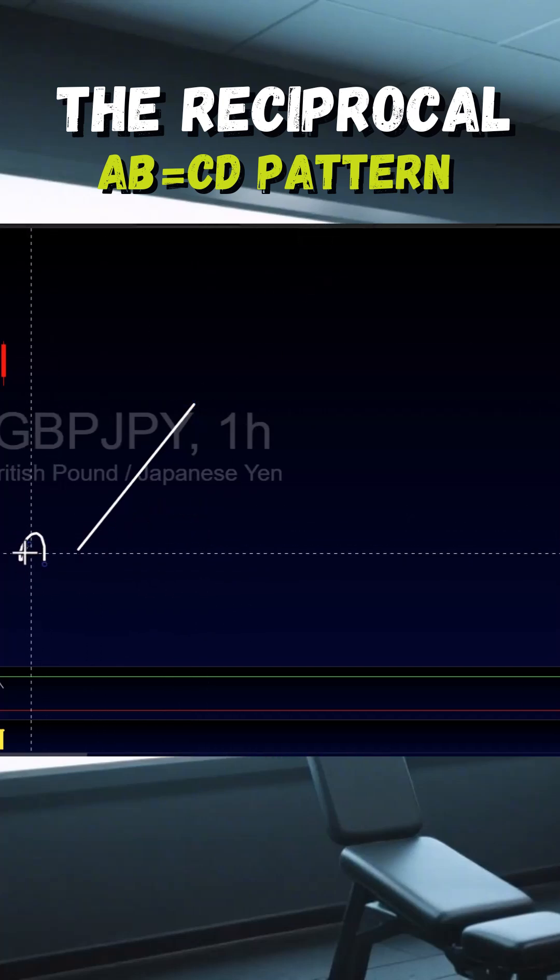We have point A, then B. This is our extension. We then have a pullback, which is our C.